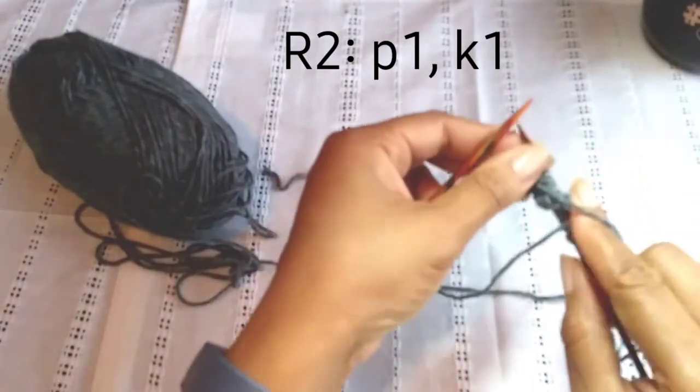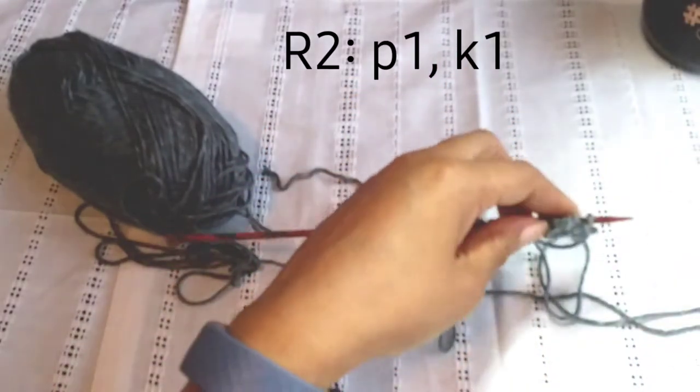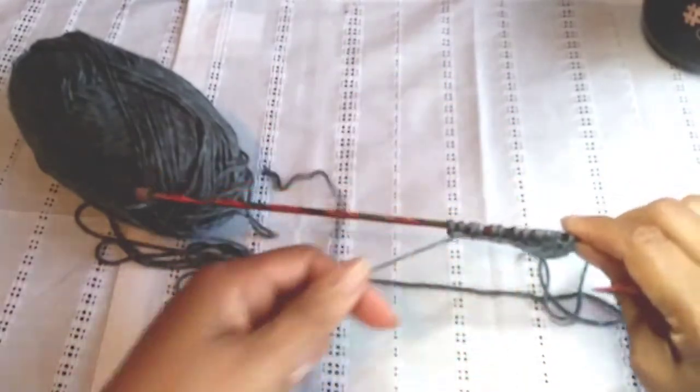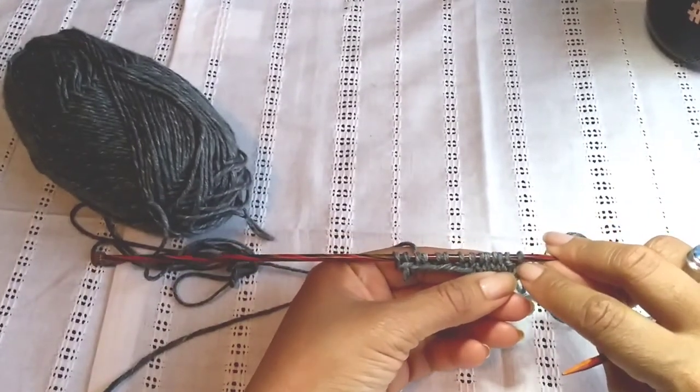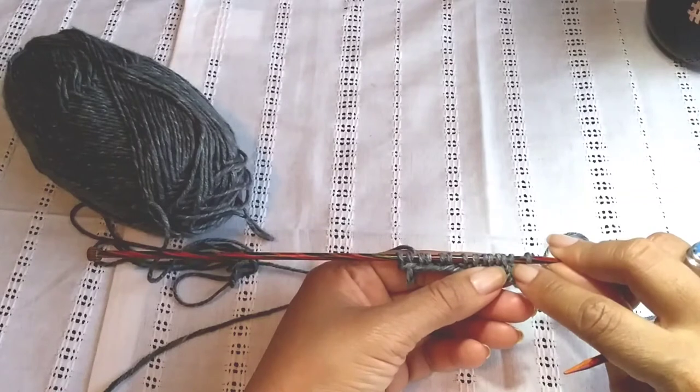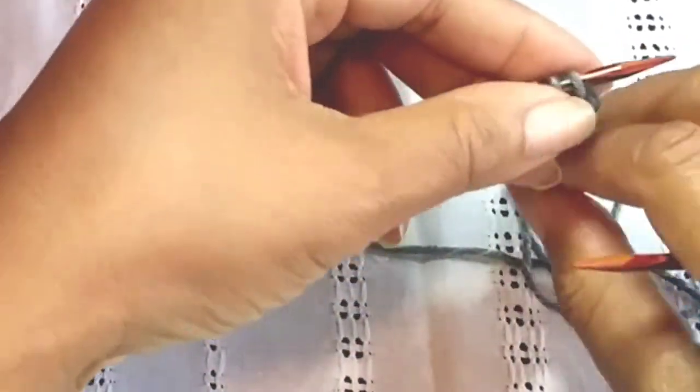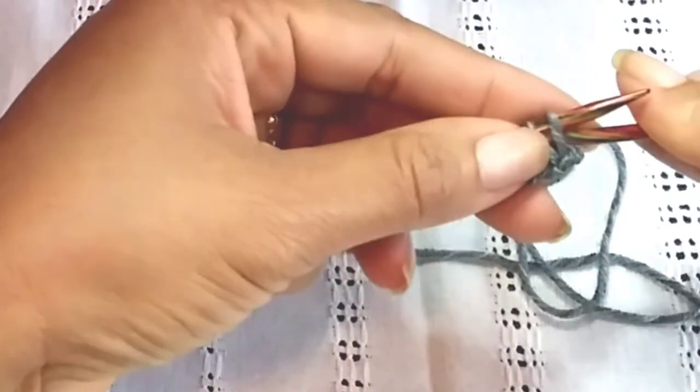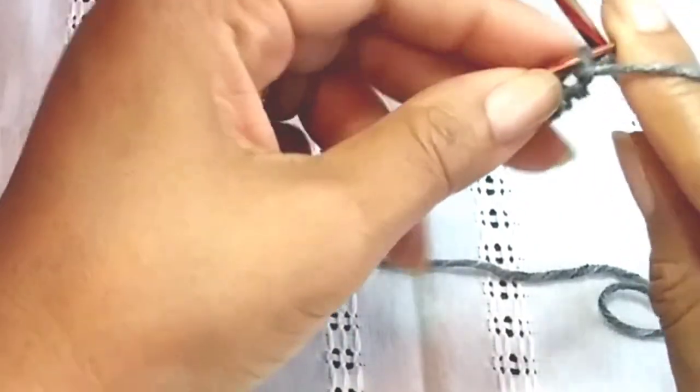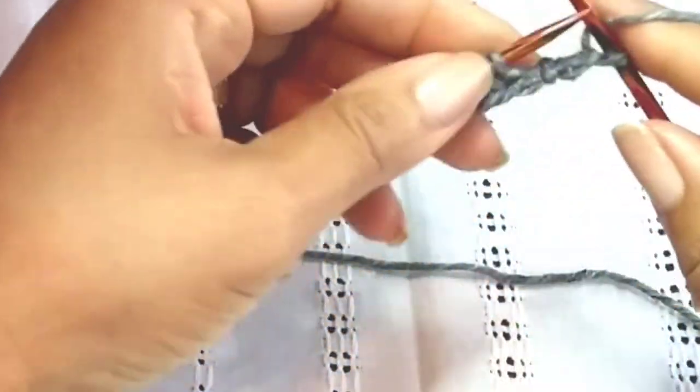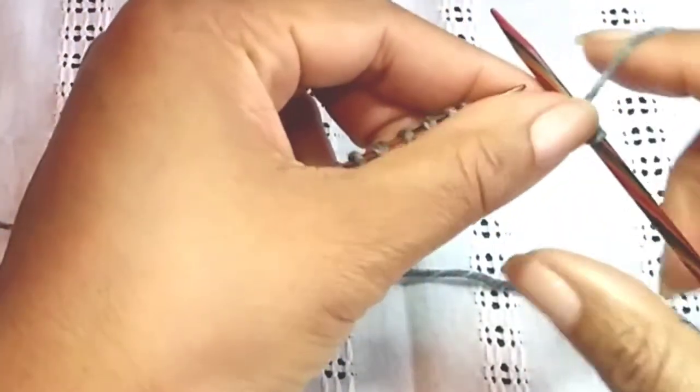Now row two. Turn your work around and what you're going to do is if there's a knit stitch, you're going to purl it. Where there's a purl stitch, you're going to knit it. It's going to be the opposite of what this stitch shows. So how am I going to tell my knit from my purl stitches?